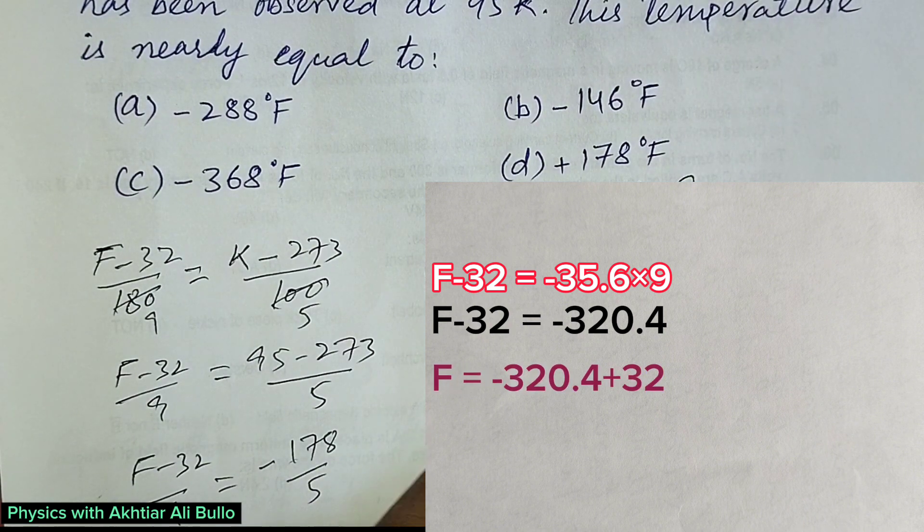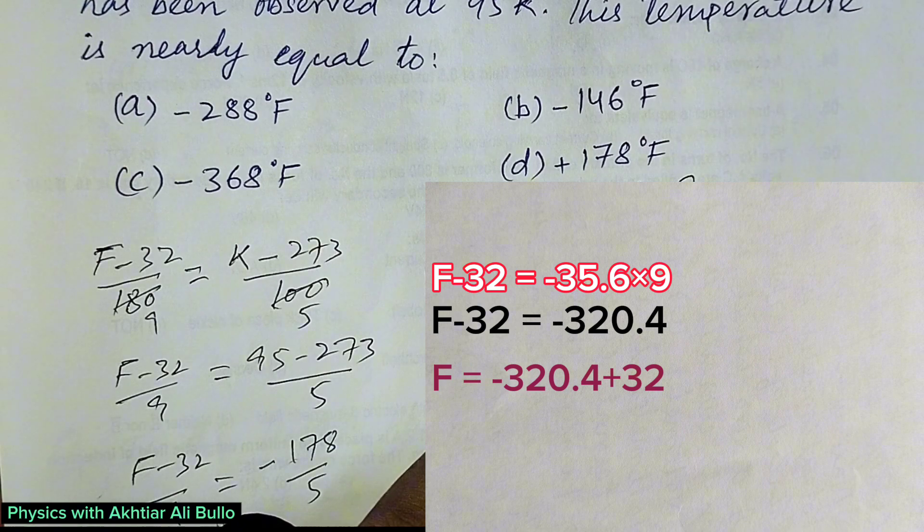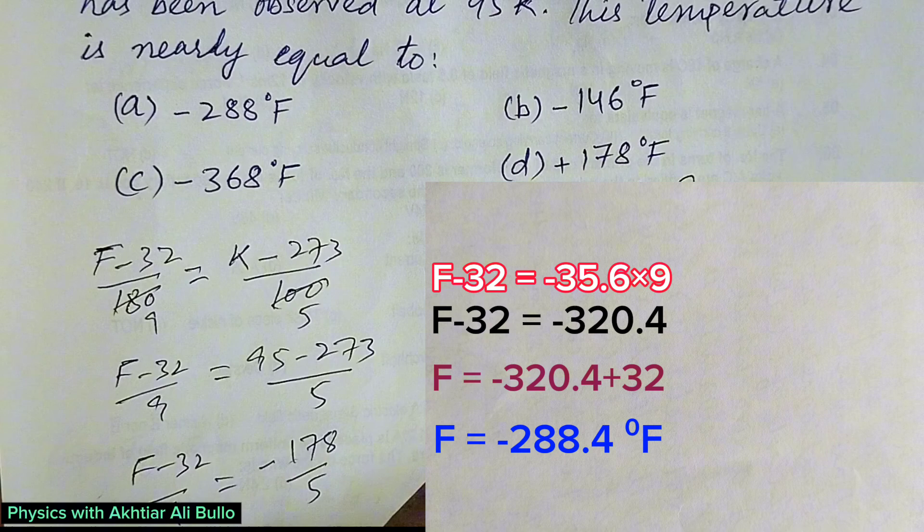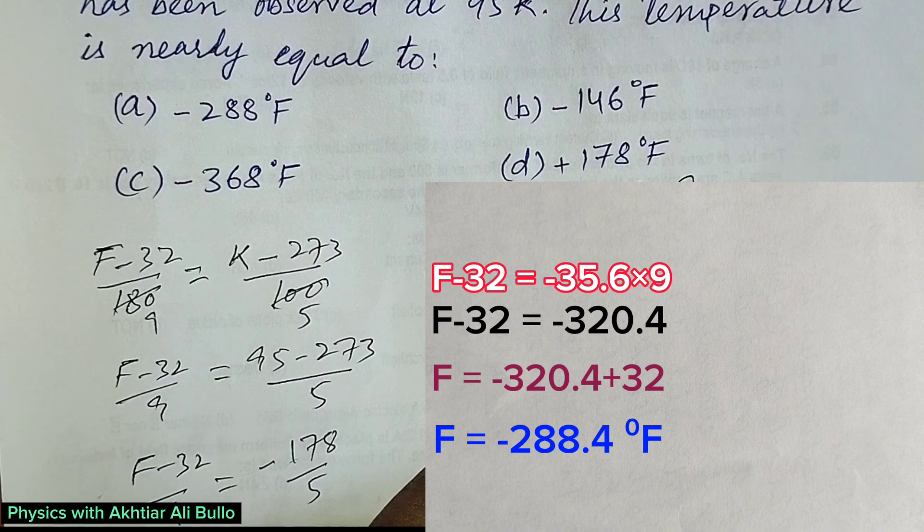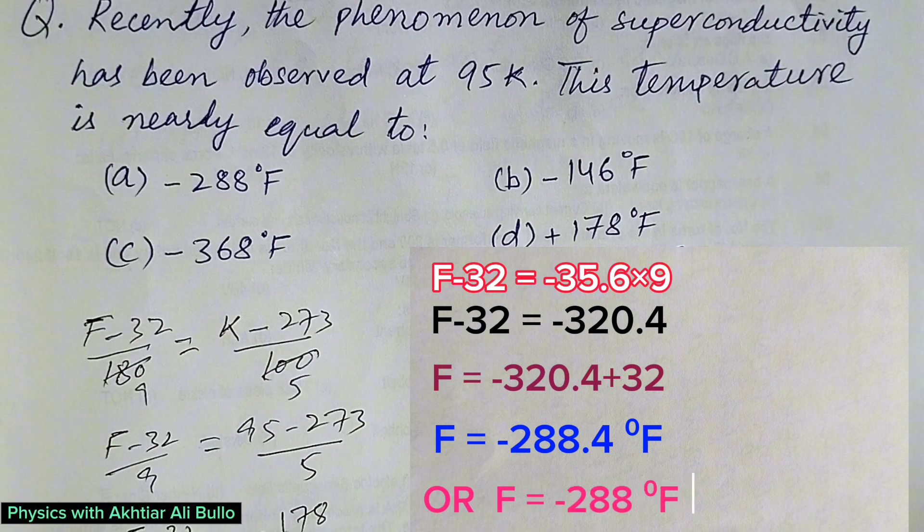So F = -320.4 + 32. F = -288.4°F, or we can also write it as F = -288°F.